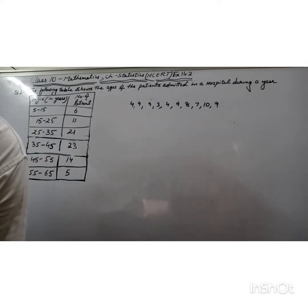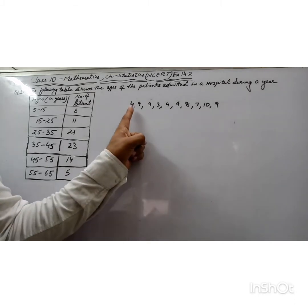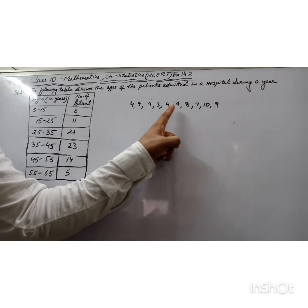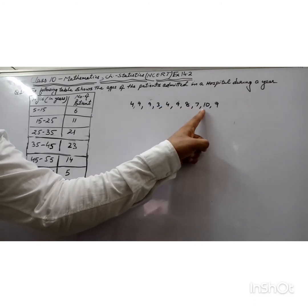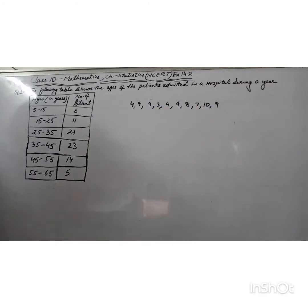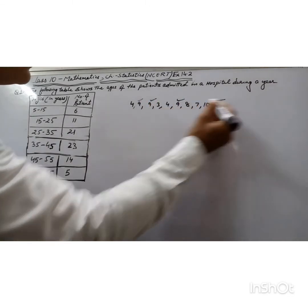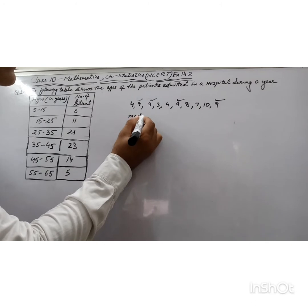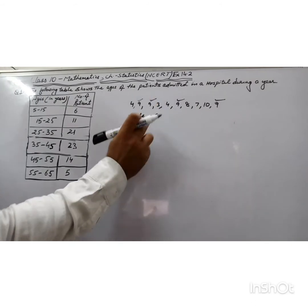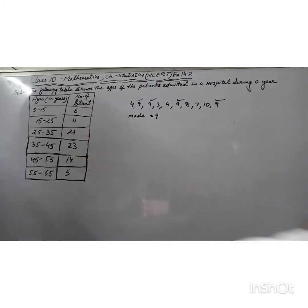Hello students, today our topic is mode. The observation which occurs most frequently is called mode. For example, 10 students' marks in a test are 4, 9, 9, 3, 4, 9, 8, 7, 10, 9. Here we see that 9 occurs most frequently - it occurs four times - so we can say that mode is 9. This is ungrouped frequency distribution.